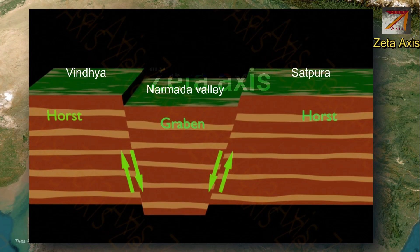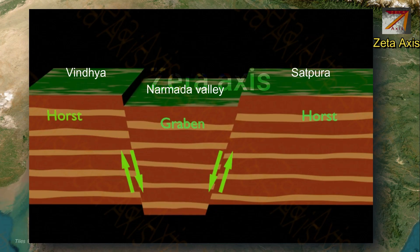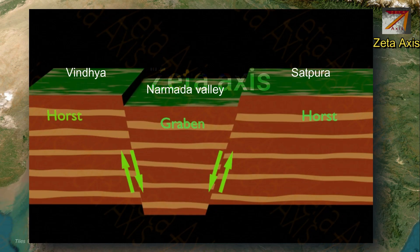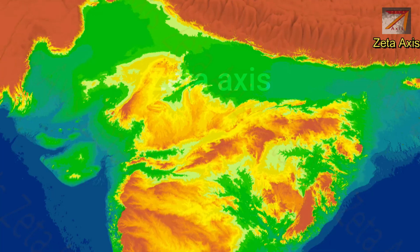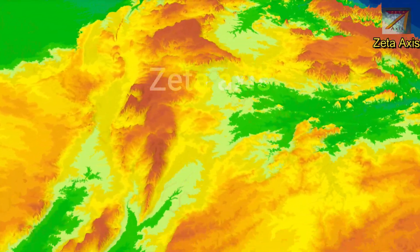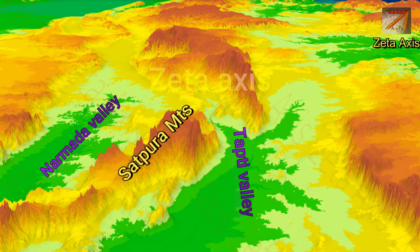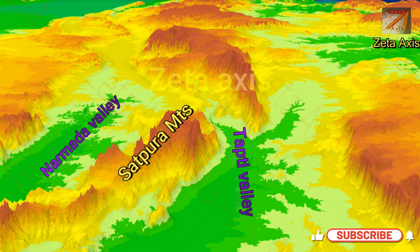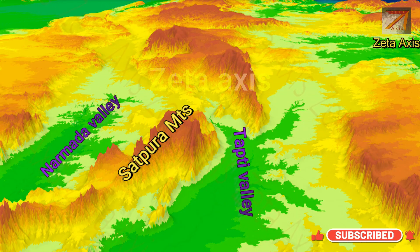Therefore, Satpura mountains are block mountains because the Satpura ranges were formed by the formation of faults in tectonic plates which caused sections of the tectonic plates to move downwards. The Satpura range is a host mountain and it is flanked by the Narmada Rift Valley in the northern part and the much smaller but parallel Tapti Rift Valley in the south.